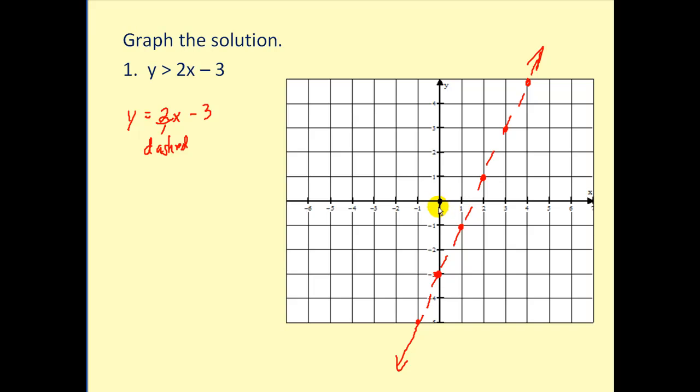That's usually the easiest point to use as long as it's not on the line. So let's replace y with 0 and x with 0. We'd have 0 > 0 - 3 or -3. This is true, which does verify we should shade the same side of the line as the test point. So the region we'll shade is this region here, which means if we pick any point in this region, it would satisfy the original inequality.